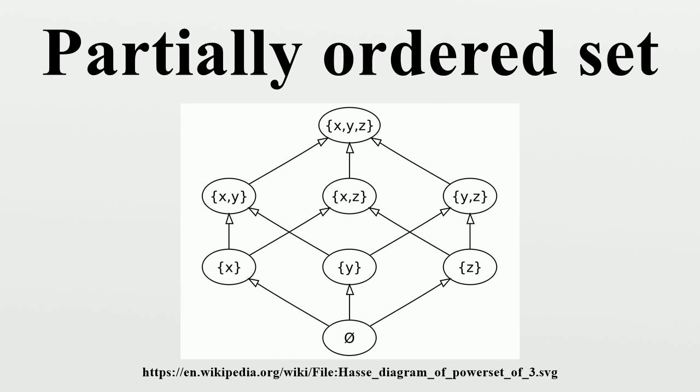A partial order under which every pair of elements is comparable is called a total order or linear order. A totally ordered set is also called a chain. A subset of a poset in which no two distinct elements are comparable is called an antichain.